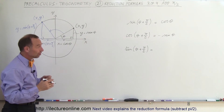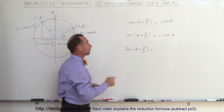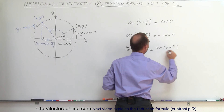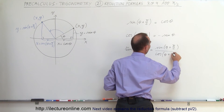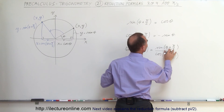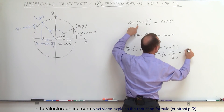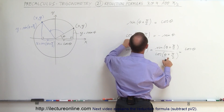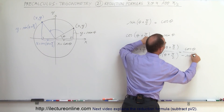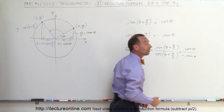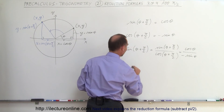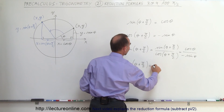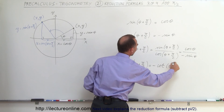Now for the tangent, since it's the sine divided by the cosine, we can write this as the sine of theta plus pi over 2 divided by the cosine of theta plus pi over 2. The sine of theta plus pi over 2 becomes the cosine of theta, and the cosine of theta plus pi over 2 becomes negative sine of theta. Cosine divided by sine is the cotangent, with a negative sign in front, which means the tangent of theta plus pi over 2 becomes the negative cotangent of theta.